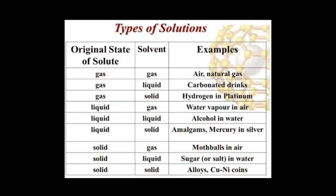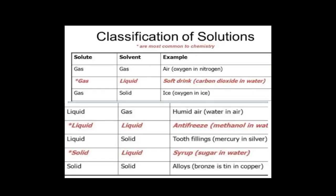We can again divide solutions into nine types on the basis of the original state of the solute and solvent, where gas, liquid, or solid can behave as either solute or solvent. Here in this table there are some common examples: air, in which gas acts as solute (oxygen) and gas acts as solvent (nitrogen); soft drinks, in which carbon dioxide gas is the solute and water is the solvent; humid air, antifreeze, tooth fillings, syrup, and alloys are further examples with different solutes and solvents.